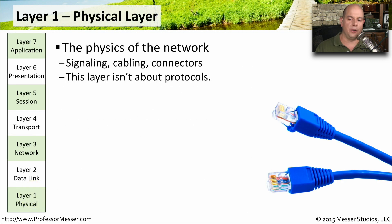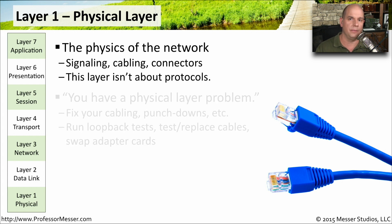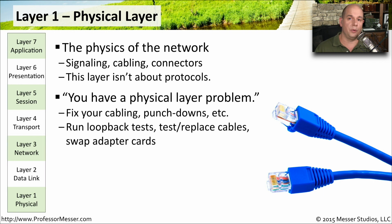Layer 1 of the OSI model is the physical layer. This is the layer that's all about signaling — getting the signal across from one side of the network to the other, whether it's going over cable or fiber. We're not really talking about protocols at this point. You often hear someone troubleshoot and say they have a physical layer problem, meaning there's a problem with the cable — maybe the distance between two devices is over the specification, or something is not punched down properly.